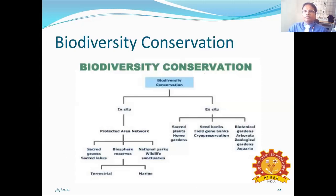Biodiversity conservation — how to conserve biodiversity? There are two types of biodiversity conservation methods. One is in-situ biodiversity conservation and another is ex-situ conservation. Under in-situ conservation, you have the protected area network. Under ex-situ conservation, you have different arrangements: sacred plants, home gardens, seed banks, field gene banks, cryopreservation, botanical gardens, zoological gardens, aquaria, etc. In-situ conservation can also be terrestrial or marine, depending on whether it is on land or in marine water.